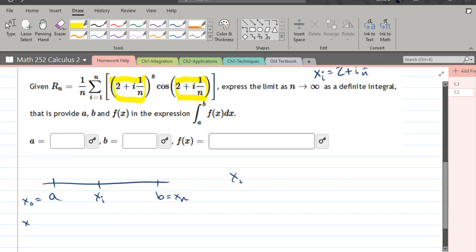We just got xi above, so let's rewrite that as 2 plus i over n. Now let's figure out what x0 is - it's going to equal a. Using our formula, x0 means we replace i by 0, so 2 plus 0 is 2. Therefore x0 is 2, which is a.